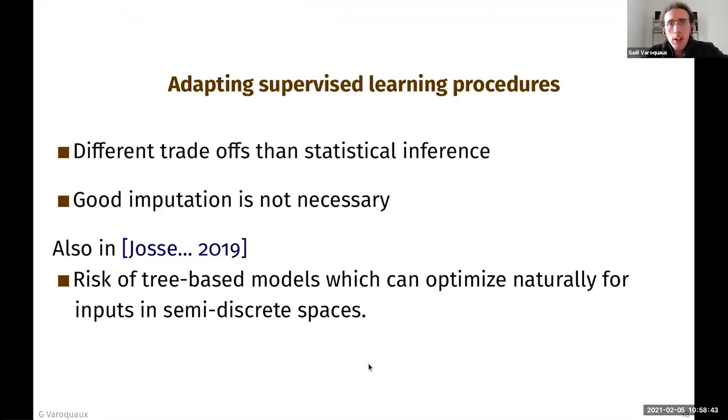Okay. So we can adapt supervised learning procedures. This will lead us to different trade-offs than classical statistical inference. And this is something to me that's quite important and I'd like to stress. We have different goals. We have different tools. And hence, we're not tied by the classical good practice. Good imputation is not necessary, as I've shown you.